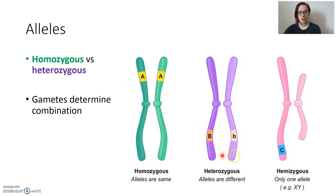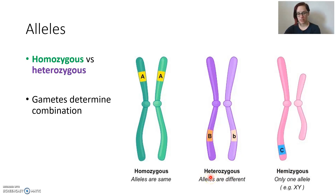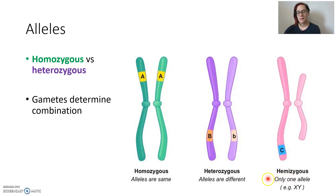Over here we've got heterozygous, because on the left chromosome we have one version of the gene, and on the other, it's a slightly different variant — a different coding. Heterozygous means one of each, or different. So homozygous has the same, heterozygous has one of each. In certain cases involving the sex chromosomes, it's called hemizygous, where only one of those alleles even exists.